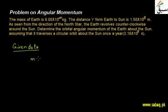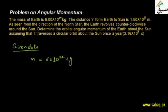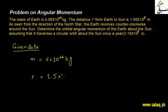Let us write down the given data. The mass of Earth is M = 6 × 10²⁴ kg. The distance R from the Earth to the Sun is represented by R = 1.5 × 10¹¹ meters. This is the distance between the Sun and the Earth.